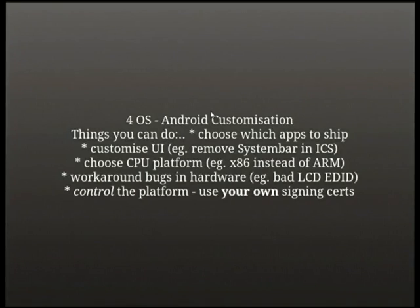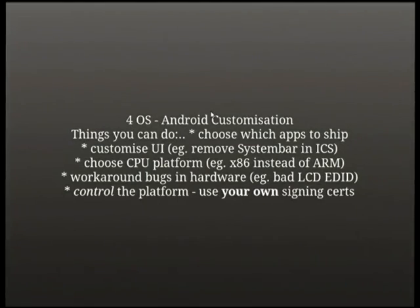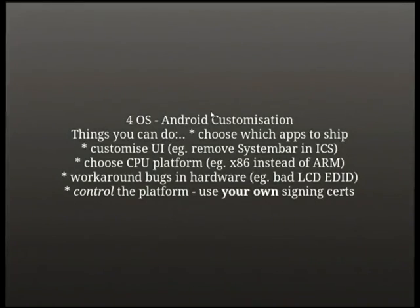At the Android framework level, you can choose which apps ship with the device — similar to making your own distro — customize the user interface such as removing the system bar, and choose the CPU platform. For example, I've been working on getting Android running on x86 boxes, which is largely a community effort since Intel support is still limited. Importantly, you control which certificate the system uses to grant privileged API access to apps.